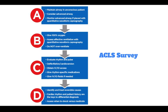In the ACLS survey, first you want to address airway. Maintain the airway in an unconscious patient, considering advanced airway placement, and monitor the advanced airway with quantitative waveform capnography. Next is breathing: give 100% oxygen, assess effective ventilation with quantitative waveform capnography, and do not over-ventilate.